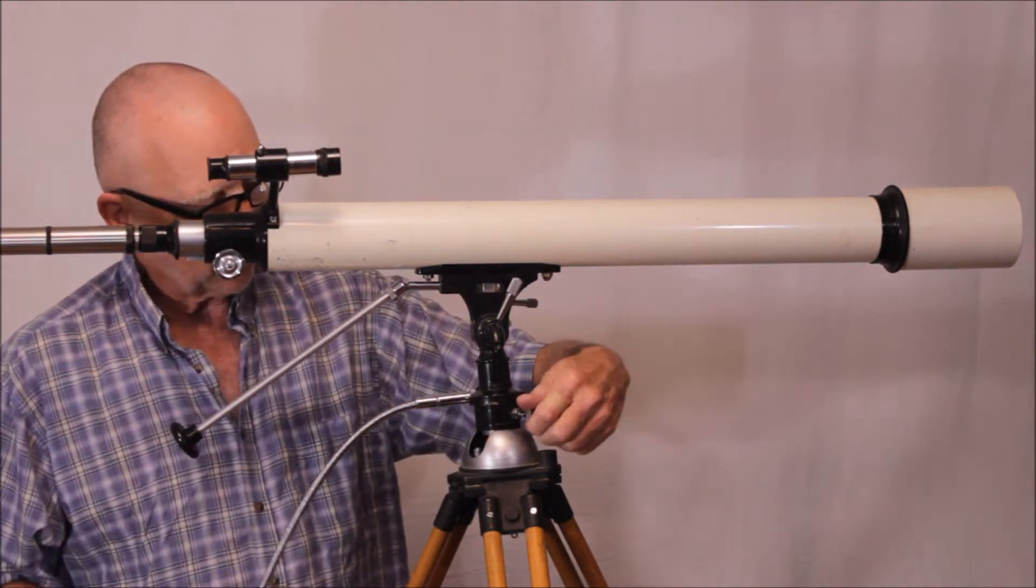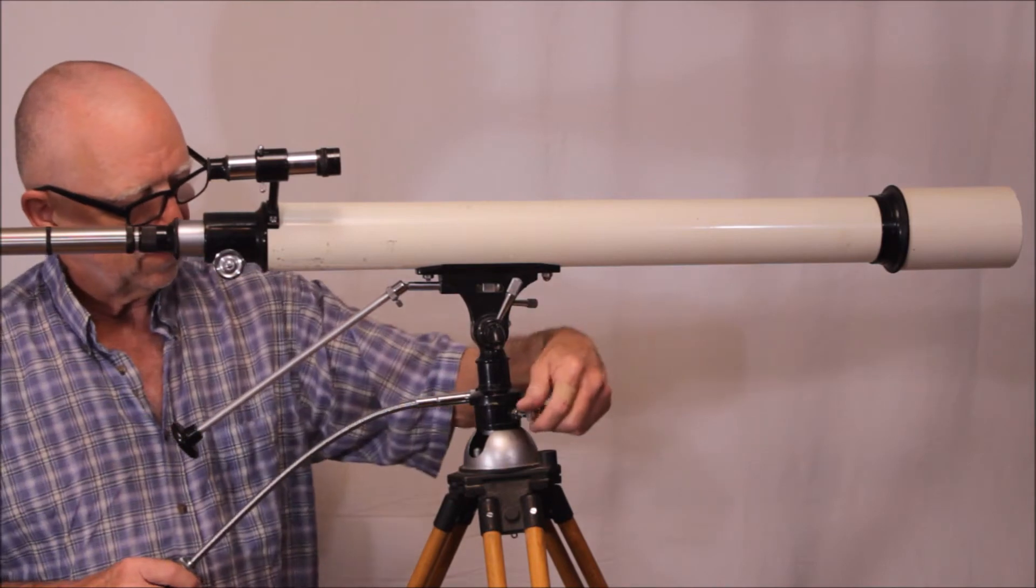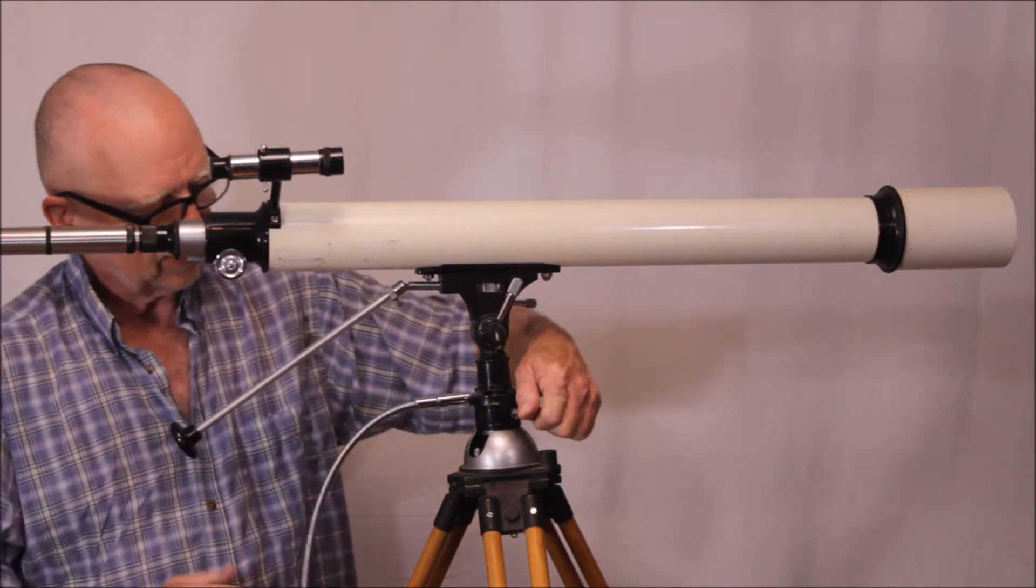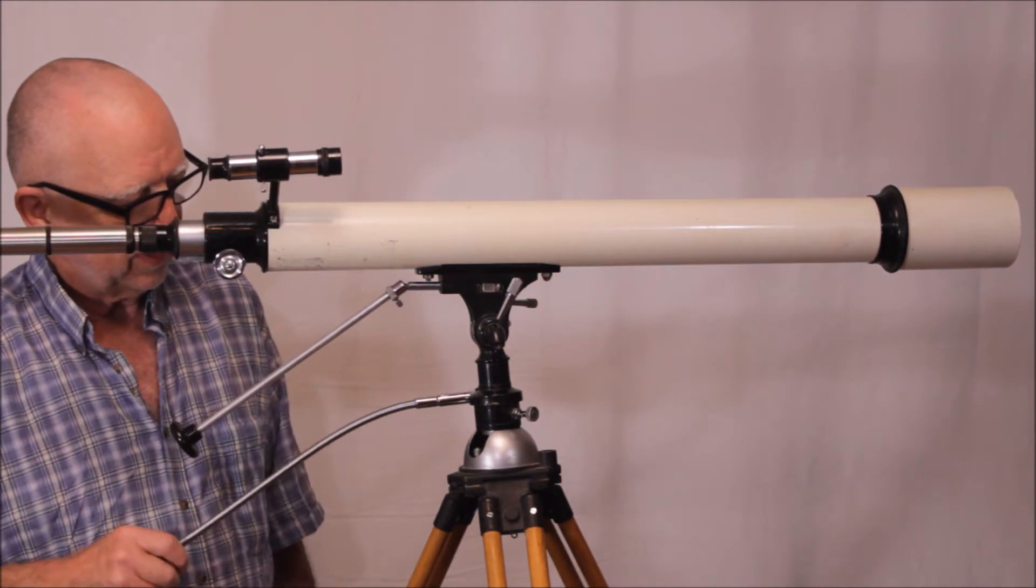Here's your lock in azimuth. So you can swing it around with that loose and you lock it down and you have slow motion in azimuth.